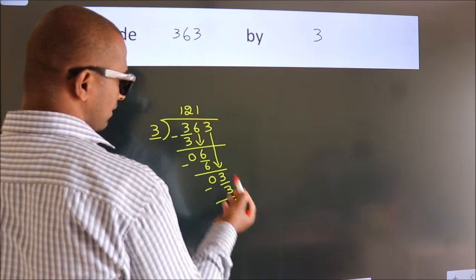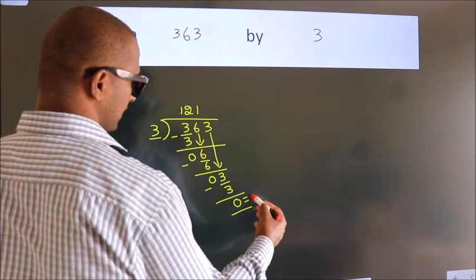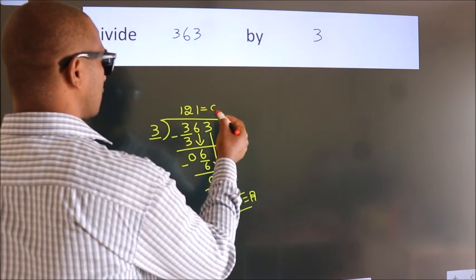After this, no more numbers to bring down. So we stop here. This is our remainder. This is our quotient.